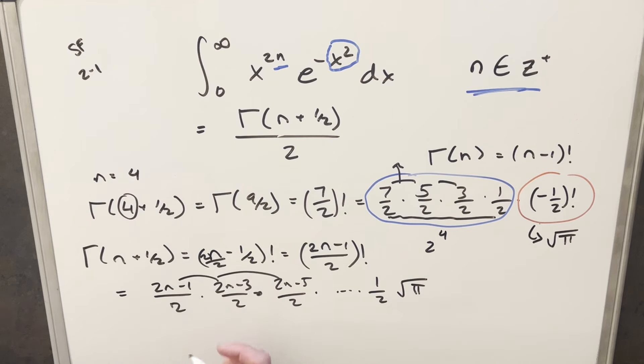But again, we have that pattern here where we're decreasing by 2. So I can actually express this denominator as 2n minus 1 double factorial. And then again like this, the number of 2s we have is the same as n. So this is going to be 2 to the n. And then we're just going to have our square root of pi. So now we're just going to take this and we'll plug it back in here to finish it off.